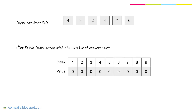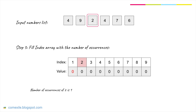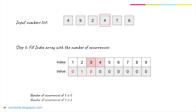Step 3 is to fill the index array with the number of occurrences of each index. For example, in our input list 1 does not occur so the number of occurrences is 0. Number 2 occurs once so the number of occurrences would be 1. Number 3 does not occur so the occurrences is 0. Number 4 occurs twice, so the number of occurrences would be 2. Similarly, we need to fill in the remaining values of the index array.